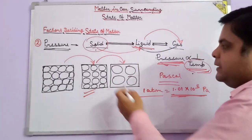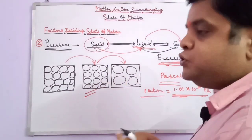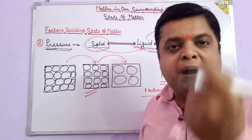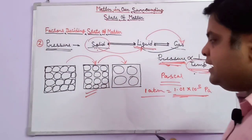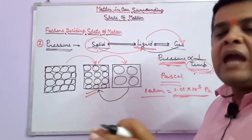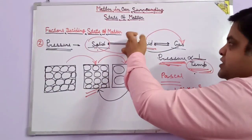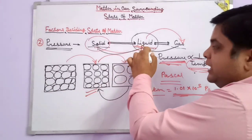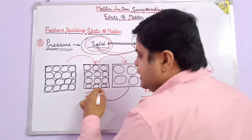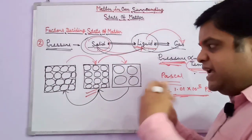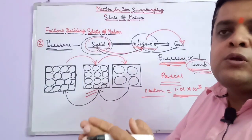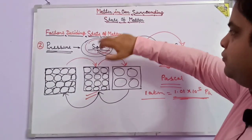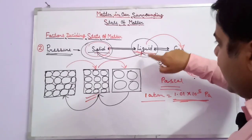When decreasing temperature, the kinetic energy of the molecules decreases. As kinetic energy decreases, pressure can then be increased to form a definite state. For changing liquid to solid, after decreasing temperature and increasing pressure, the kinetic energy of the molecules decreases and the inter-particle attraction force increases. So it can form: solid to liquid, liquid to gas, and again gas to liquid and liquid to solid.